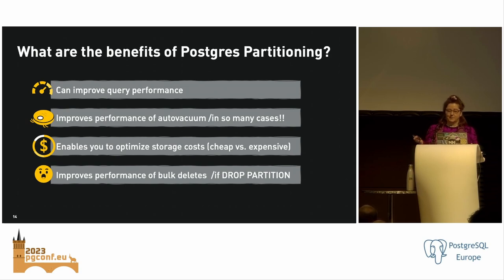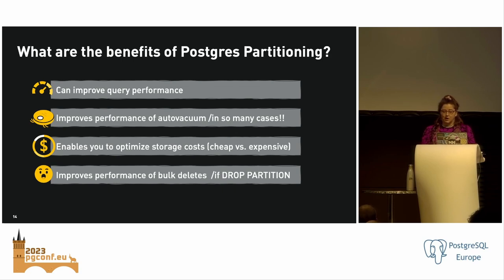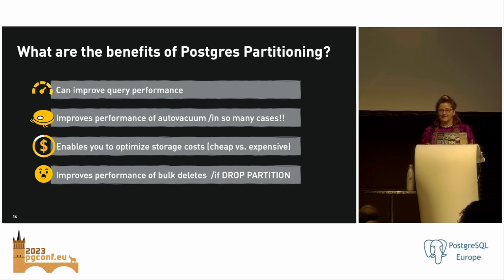A second benefit is with Auto Vacuum. Auto Vacuum can run in parallel across the different partitions, which can help you avoid that 'Auto Vacuum can't keep up' problem. And then from a storage cost perspective, you can put partitions on different types of storage — older data on big, fat, slow disk, and frequently accessed data on super fast, expensive SSDs.